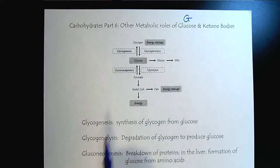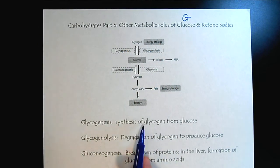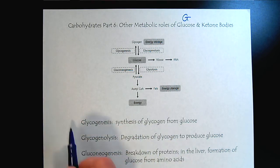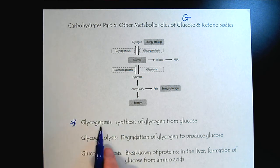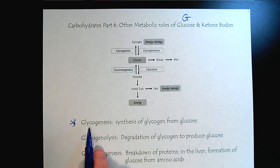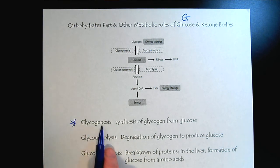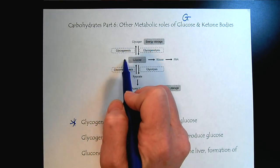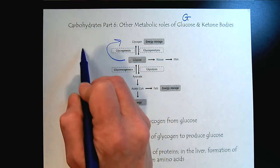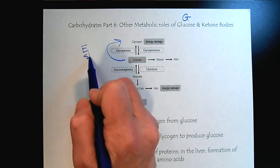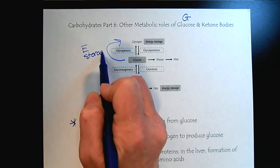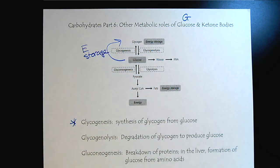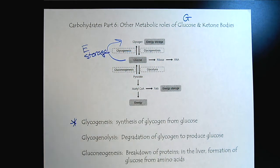So if we have plenty of glucose and we're ready to store, then we describe that as glycogenesis — the creation of glycogen. That's our energy storage mode, so when all is going well and we're rich and have lots to eat, we're in glycogenesis mode.